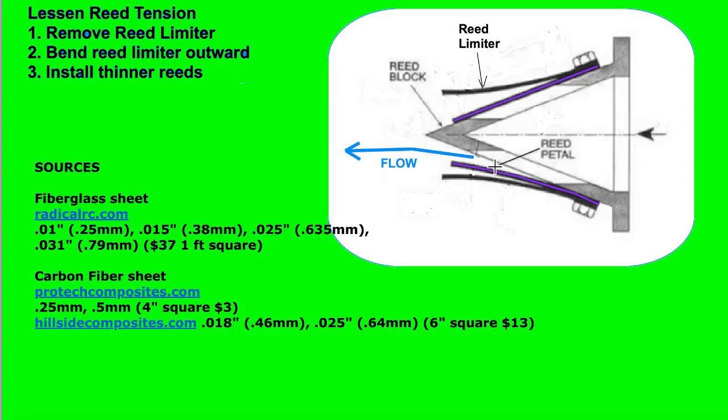Or replace the reeds with ones that are thinner. If you have a digital caliper, you should measure the thickness of your reed. And just by looking at it, you can tell if it's a carbon fiber, a black carbon fiber, or a fiberglass one. Then, from looking at the source right here, if you can find one just a little bit thinner, like maybe 10% thinner, then you can go with that.